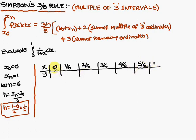So, x value is 0, you substitute the x value in the given 1 by 1 plus x, you will get 1. For 1/6 you are going to get 0.8571, if you substitute 2/6, 0.75, 3/6, 0.6666, 4/6, 0.6 and 5/6, 0.5454 and 1, it is 0.5.